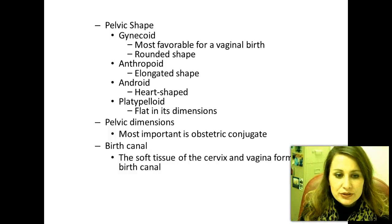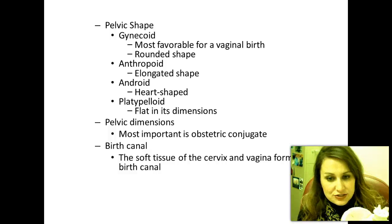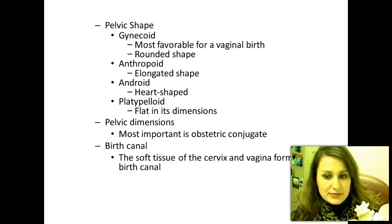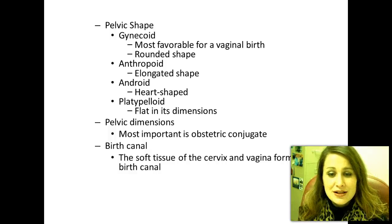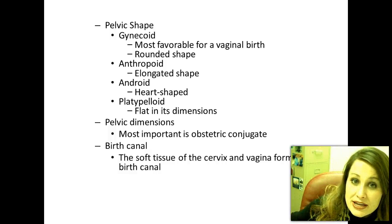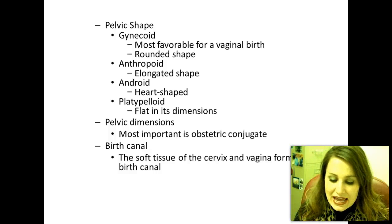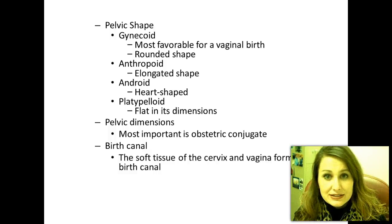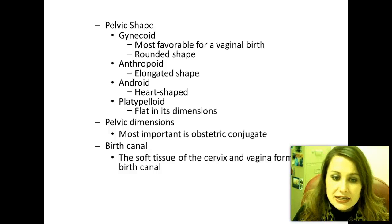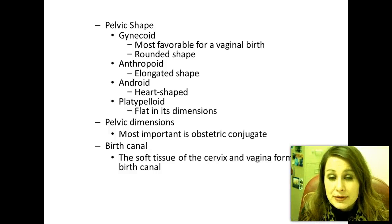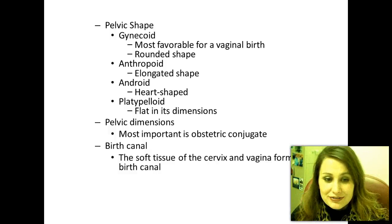When looking at the pelvis, we're examining its dimensions. Most important to the OB doctor is the obstetric conjugate — that is the smallest part of the pelvis where the head must pass through. If it cannot pass through that smallest part, there's no purpose in the woman trying to labor. When this occurs, we call it cephalopelvic disproportion, or CPD. In the chart you might see 'C-section due to CPD,' meaning the baby's head would not pass through the woman's pelvis.